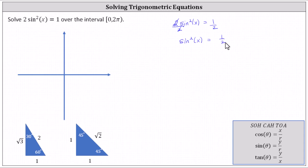Next, we want to undo the squaring by square rooting both sides of the equation. But remember, we can square a positive and a negative to get a positive, and therefore when we square root both sides of the equation, we need to include a plus or minus on the right so that we get all solutions.